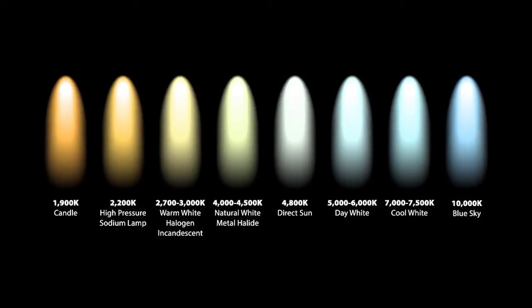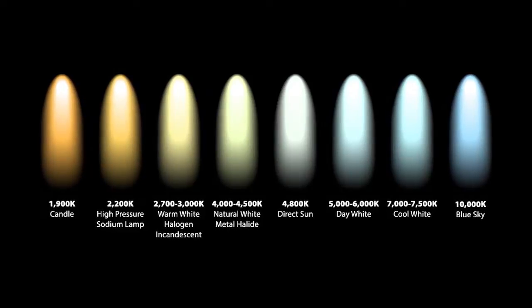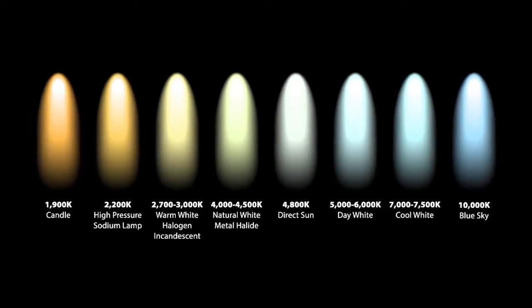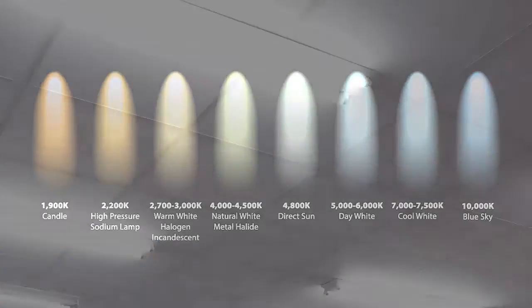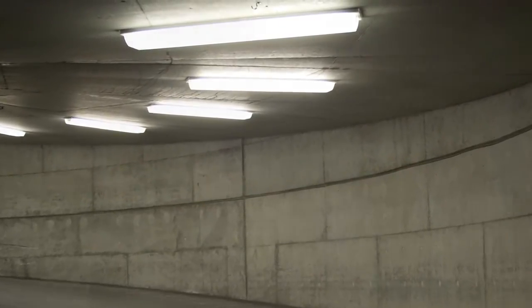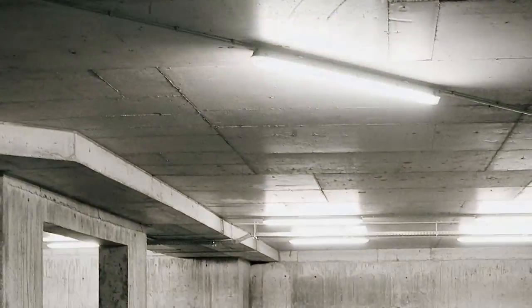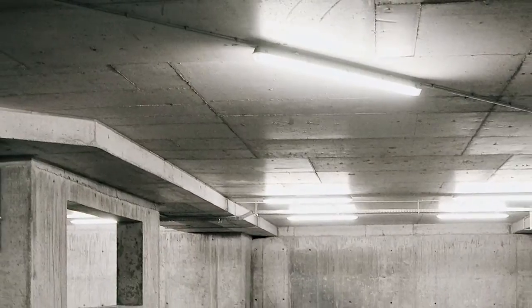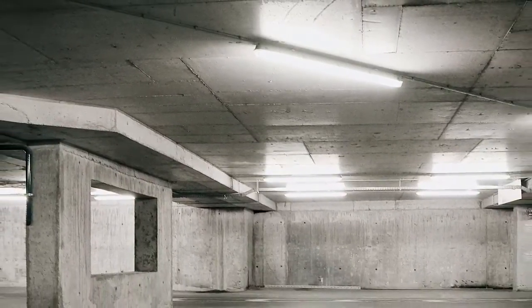As the temperature increases, the color shifts to yellow, yellowish white, white, and then to a bluish or cool white. Before LEDs were widely available, fluorescent lights with a CCT of 2700K or 3000K were known as warm white.